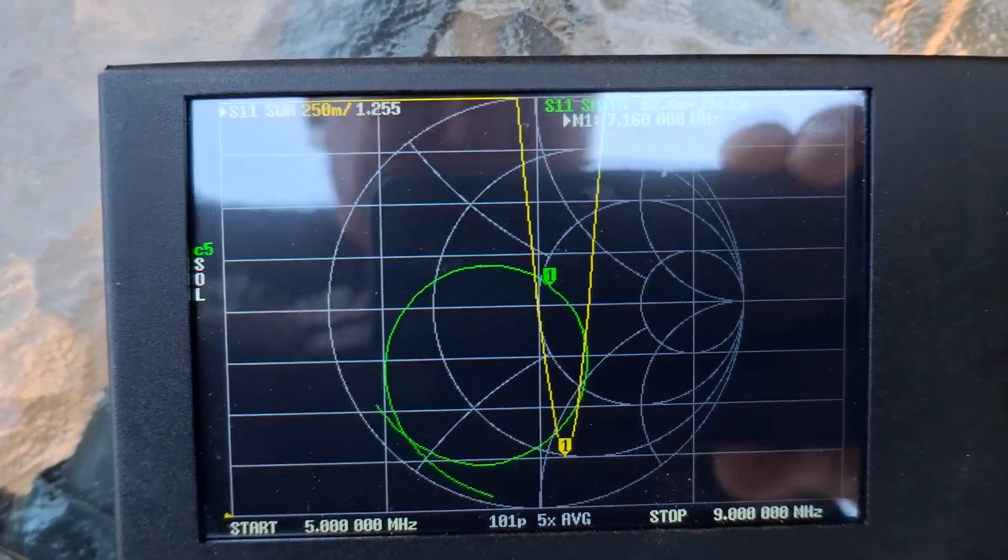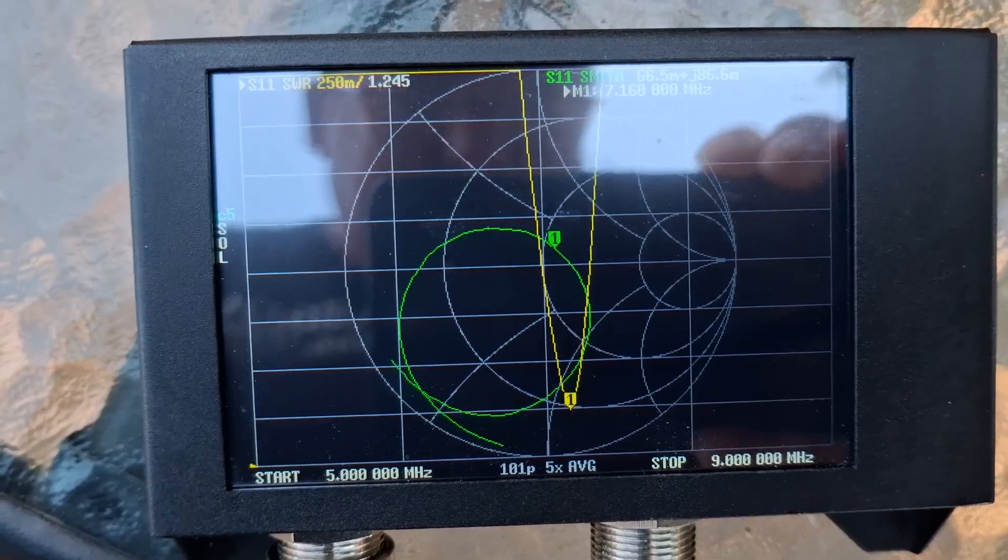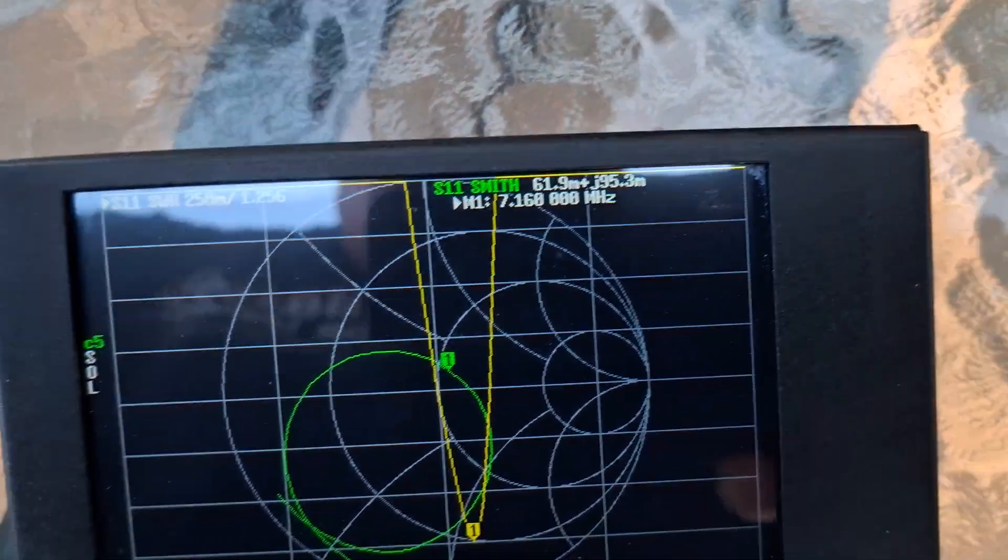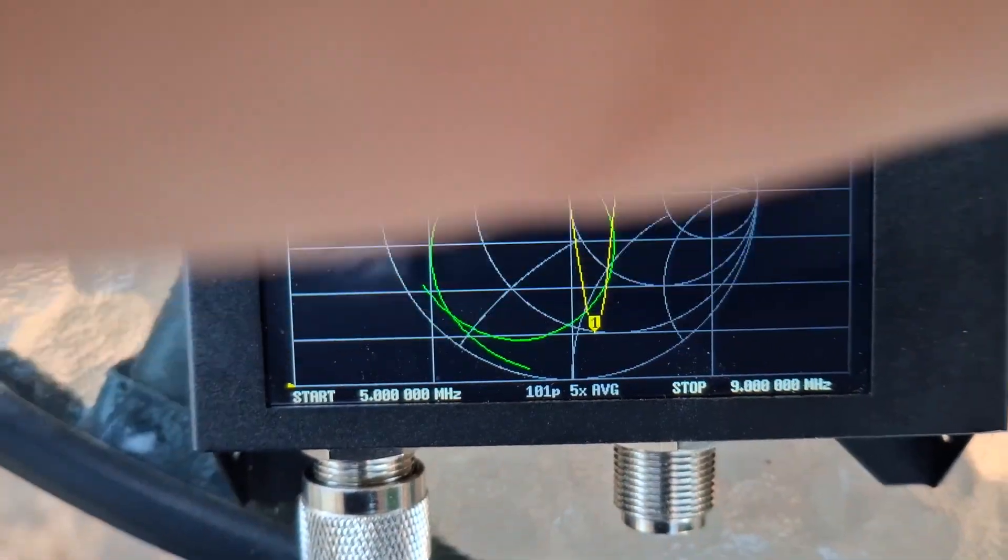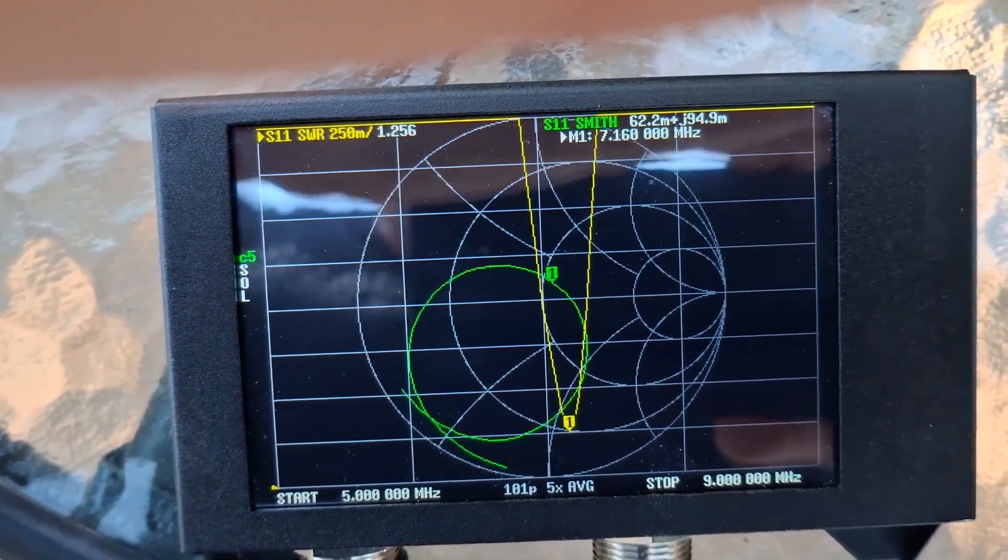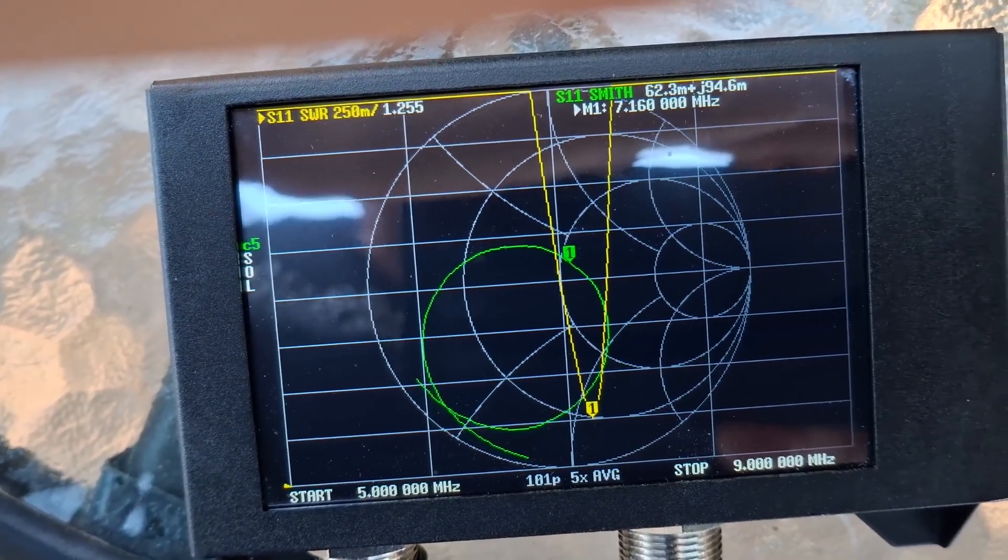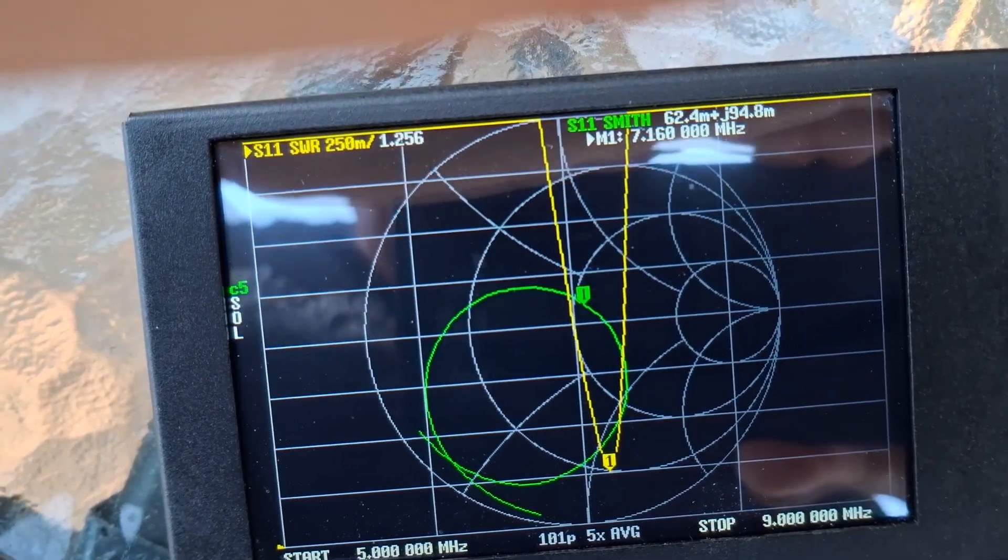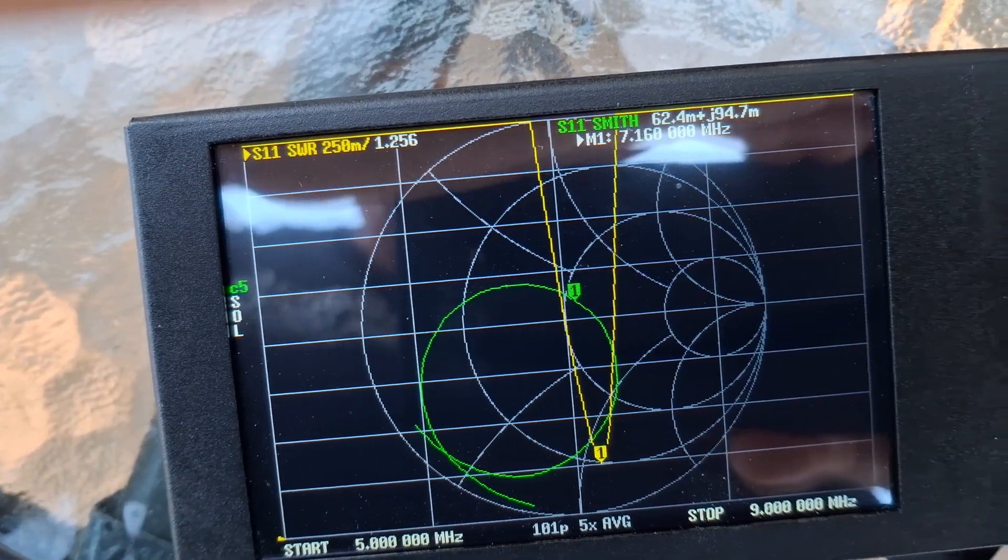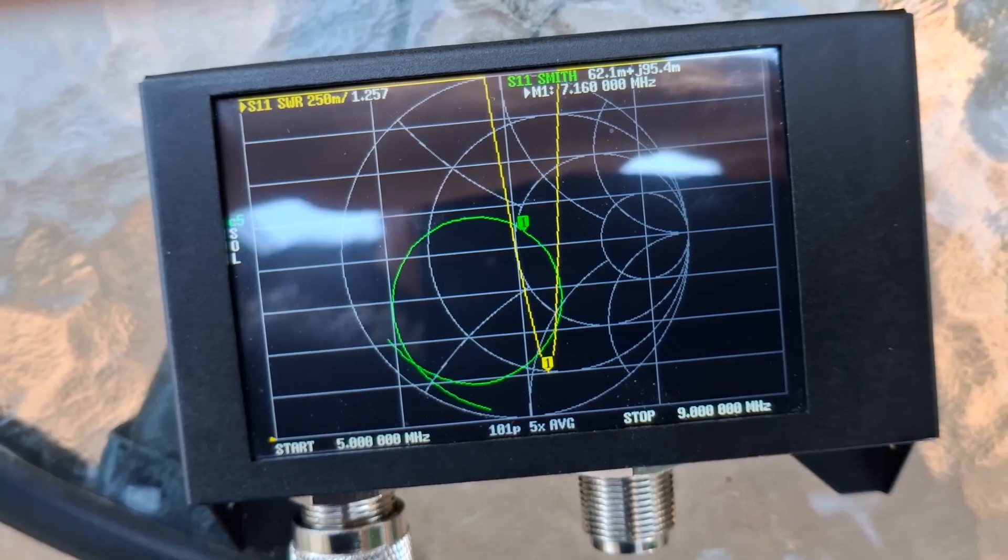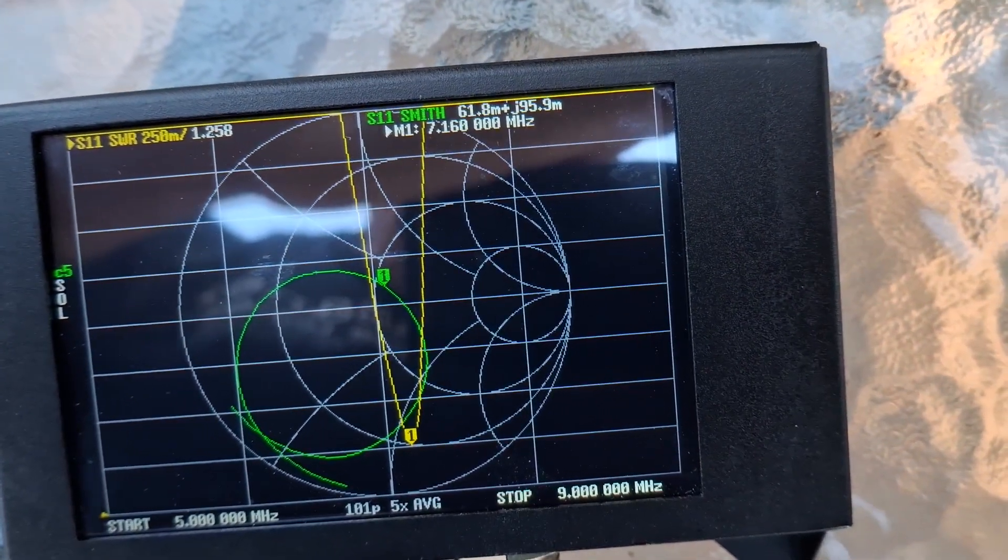Okay, real quickly we're going to look at the NanoVNA. Currently it's configured for the 40 meters, so the shunt is pulled out. And you can see down here we got a pretty good VSWR. We are at 1.256 on the 40 meter band, and that's a pretty good match right there at 7.160.